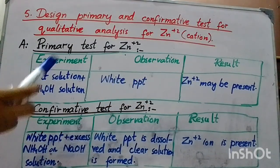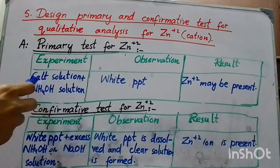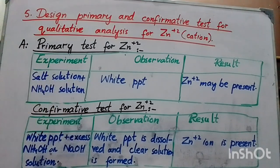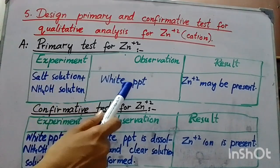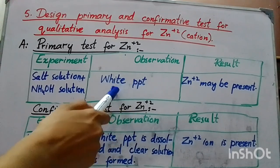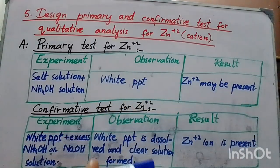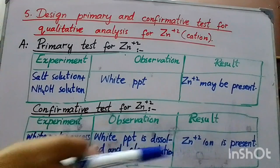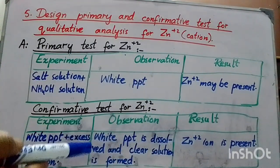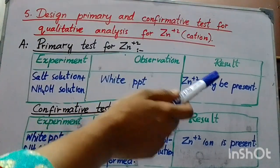In the primary test experiment, we take a salt solution and add ammonium hydroxide solution. In the observation column, if a white precipitate forms, then in the result column we write that Zn²⁺ may be present. We say 'may be' because other cations also give a white precipitate, so we cannot confirm from the primary test alone.